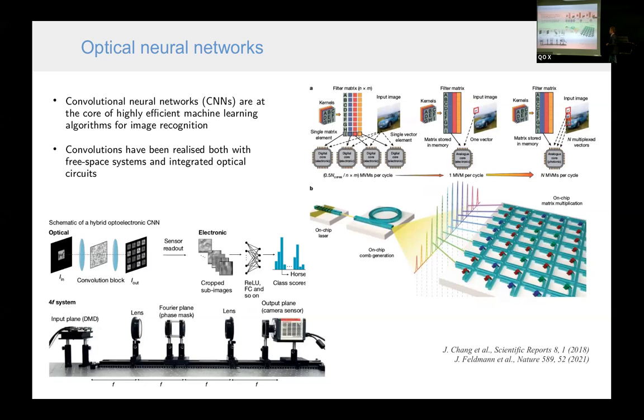Also, convolutional neural networks, which are very important for image recognition, can be built using optics. And it was realized both in the case of integrated devices, depicted here, and free space optics.